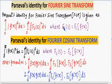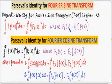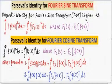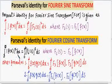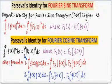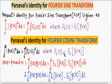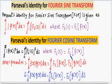So the Parseval's identity for the Fourier Cosine Transform is given as the integral from zero to infinity of f(x) squared dx, equal to the integration from zero to infinity of Fc(s) the whole squared ds, where Fc(s) is equal to the Fourier Cosine Transform of f(x). The other formulas to be kept in mind are: